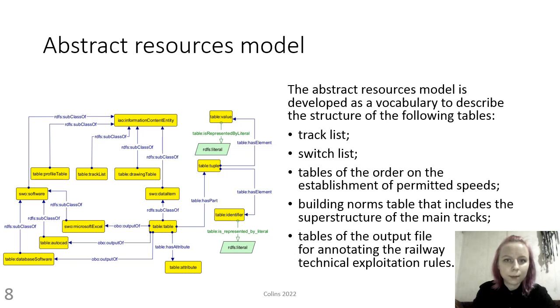For example, the class of the checklist tables, the check number and check name columns, and the Nizmini Panskuzil station attribute are included in the abstract resources model.